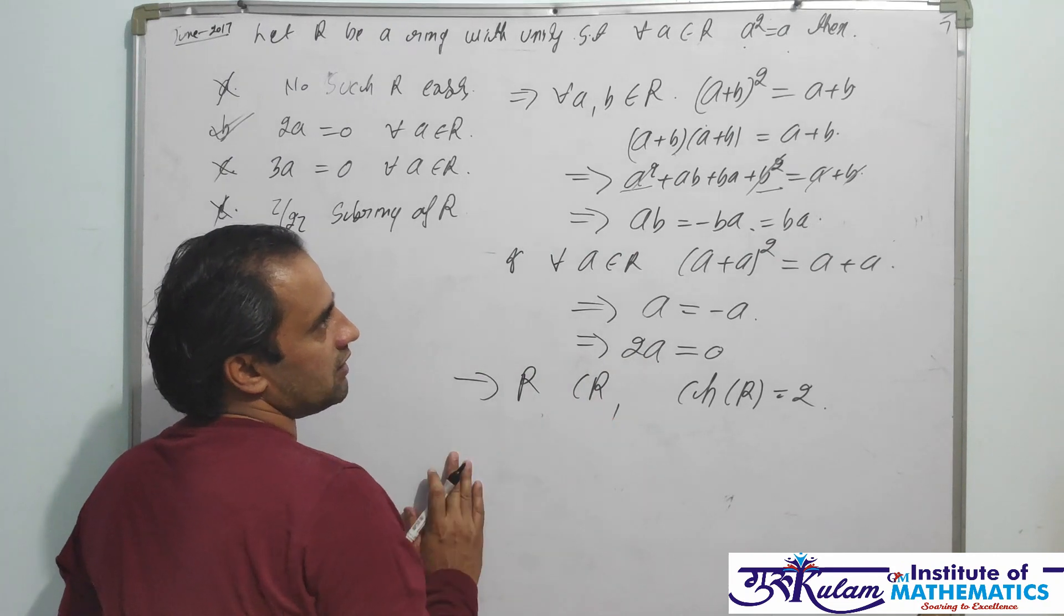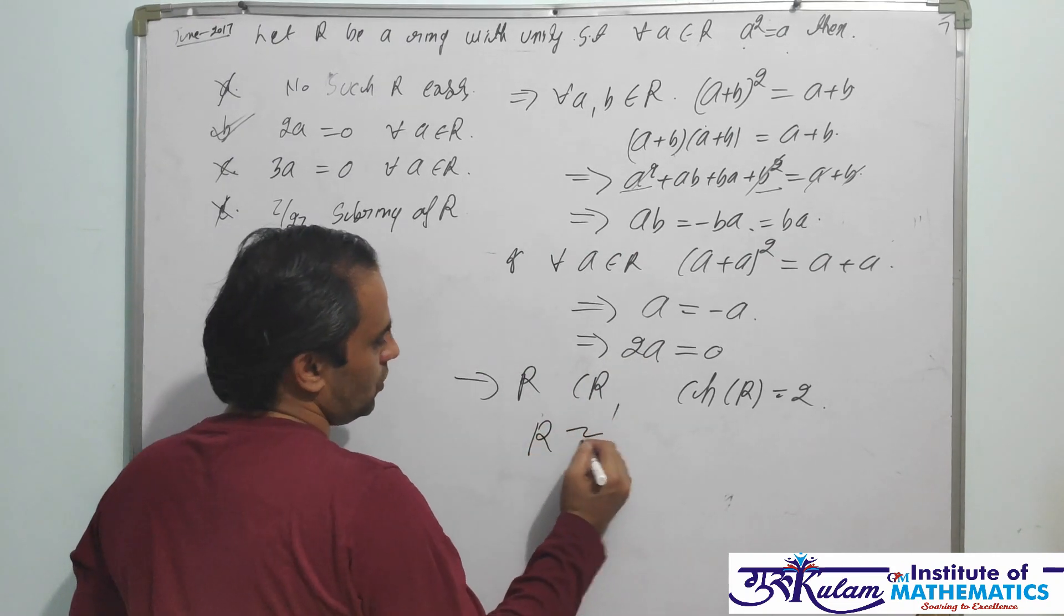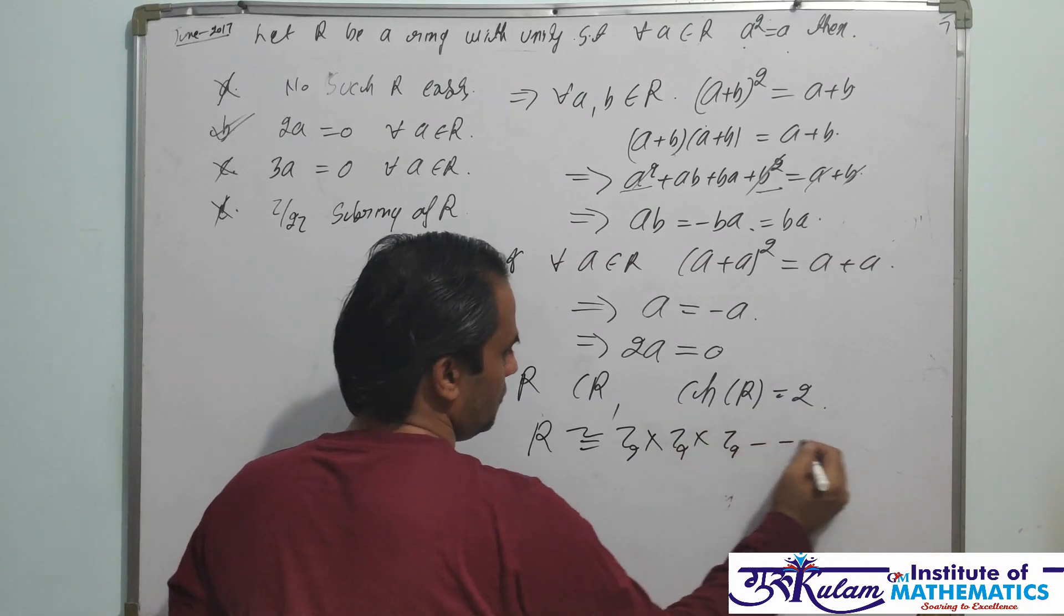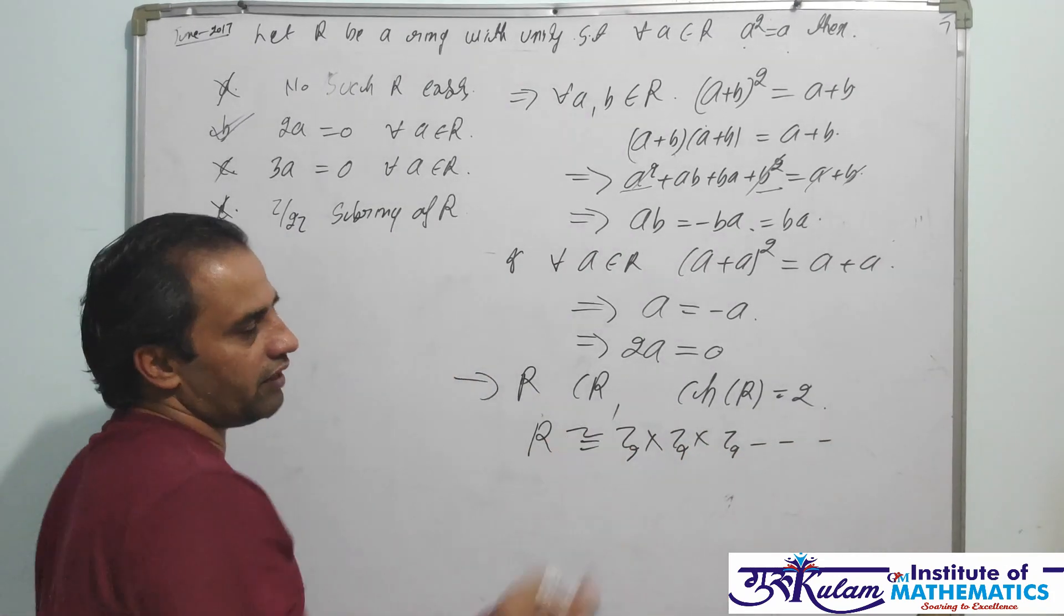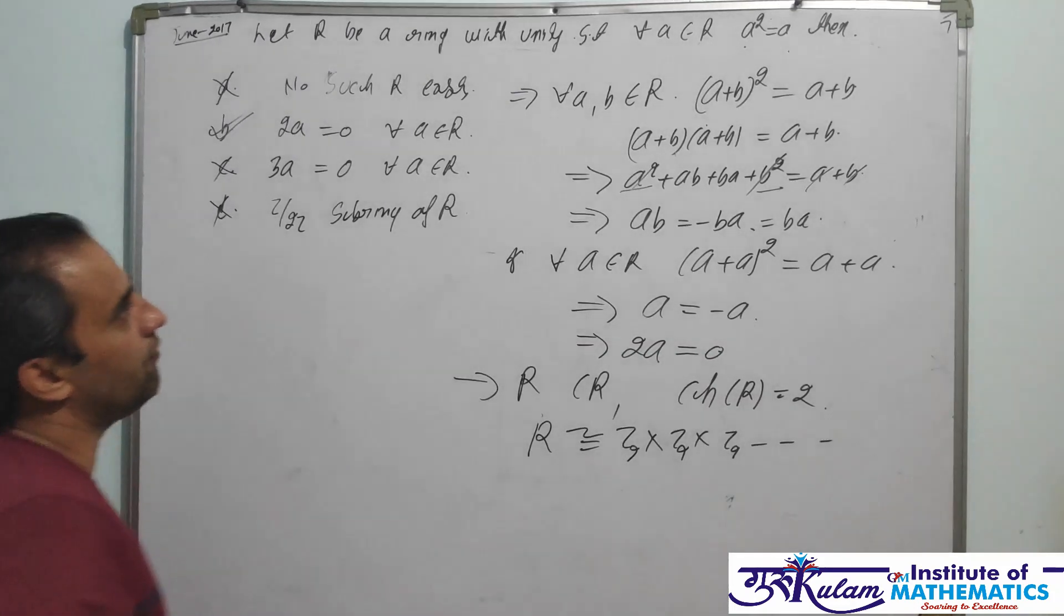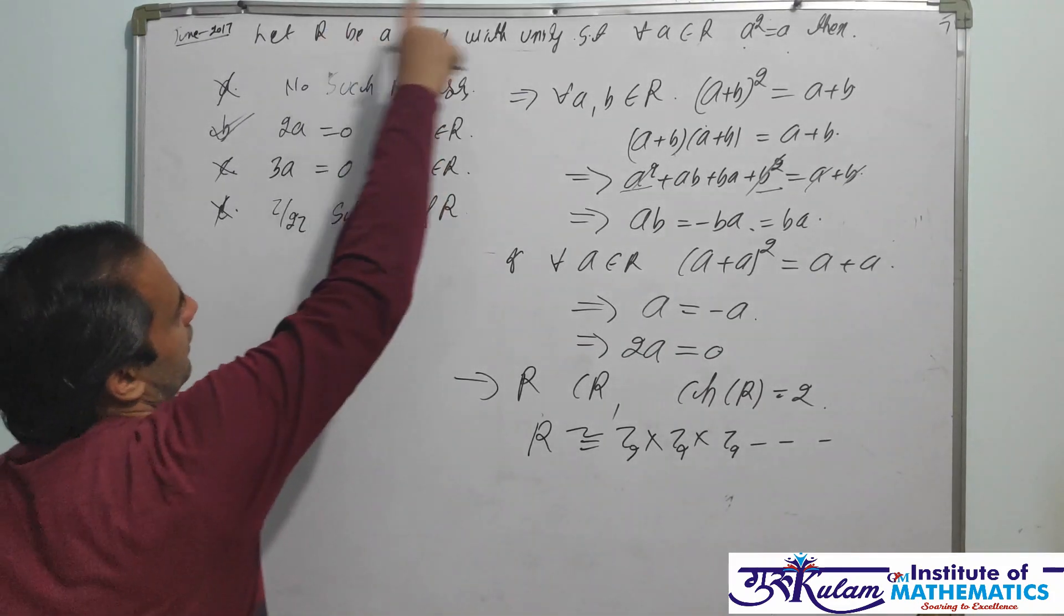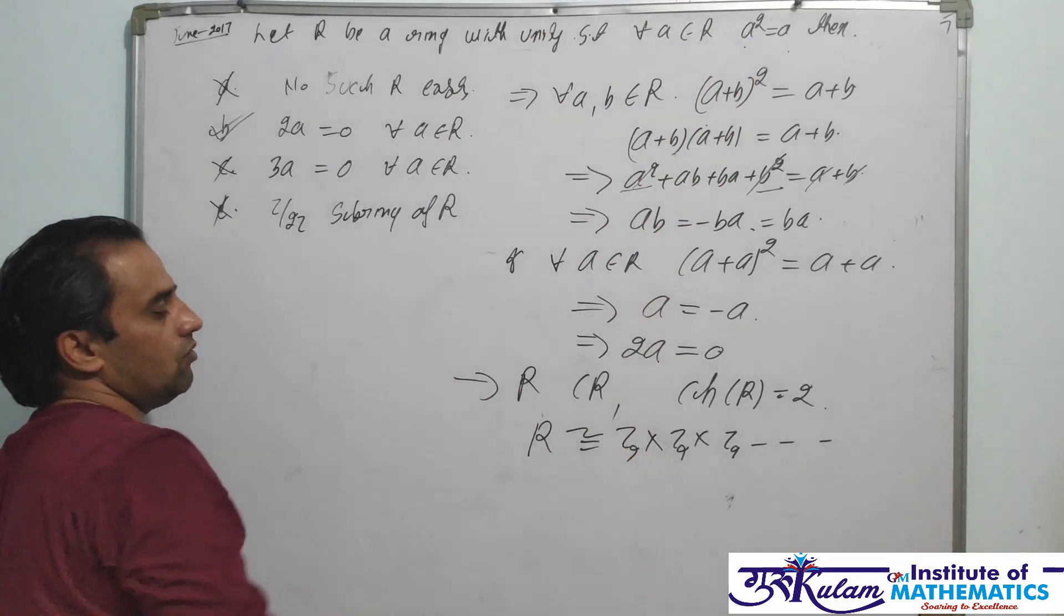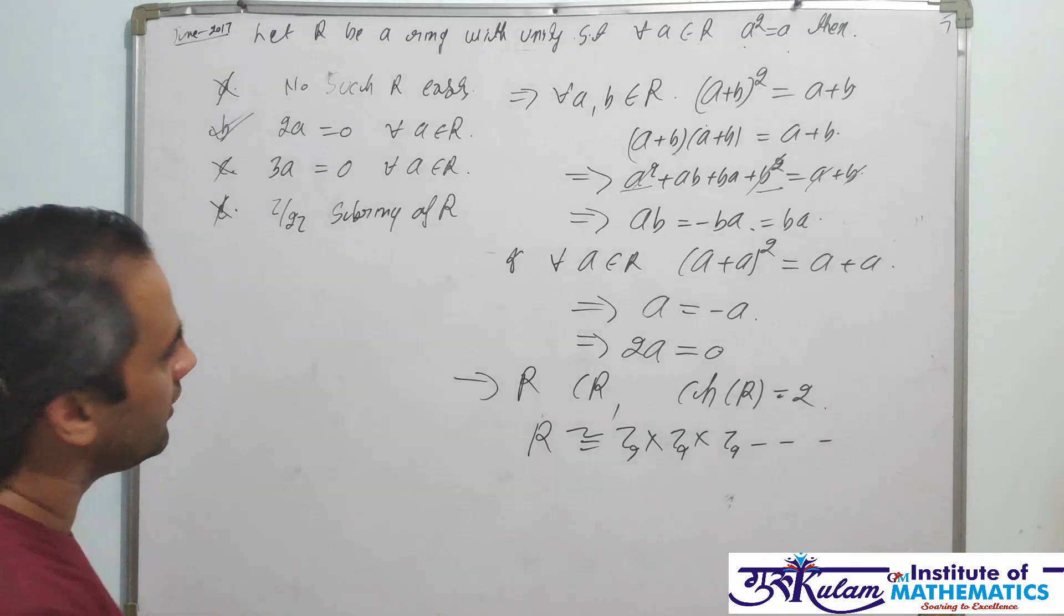Every element under addition is of order 2. And since R⁺ is abelian, R must be isomorphic to some Z2 × Z2 × Z2 × Z2. If it is finite, then finitely many times. Or if it is infinite, then infinitely many times.